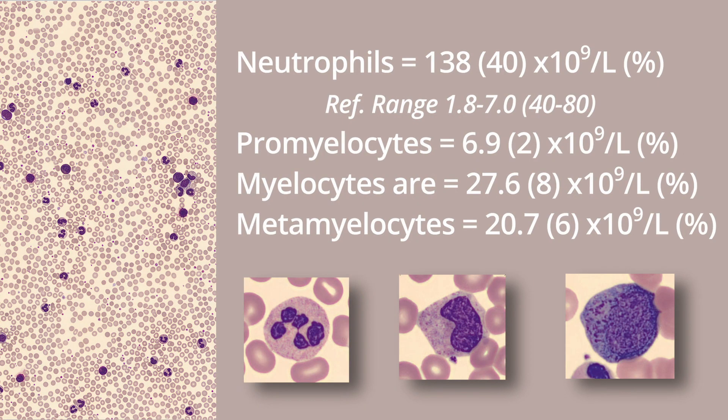The neutrophils are 138, or 40 percent of the total WBCs. Promyelocytes are 6.9, or 2 percent. Myelocytes are 27.6, or 8 percent. Metamyelocytes are 20.7, or 6 percent. Notice that this is a left shift of the neutrophil line, but there aren't really any toxic changes in the mature forms.